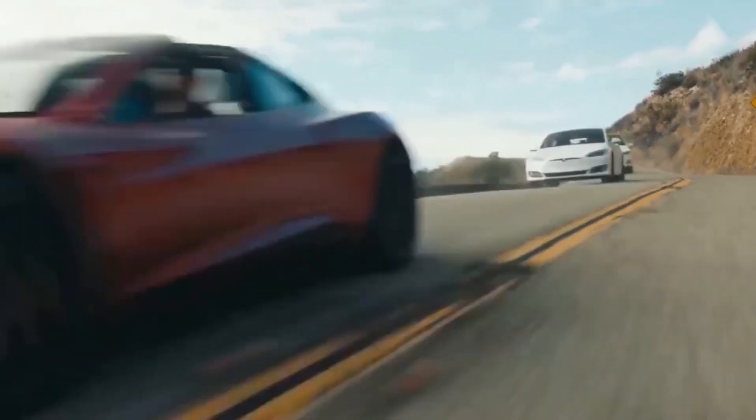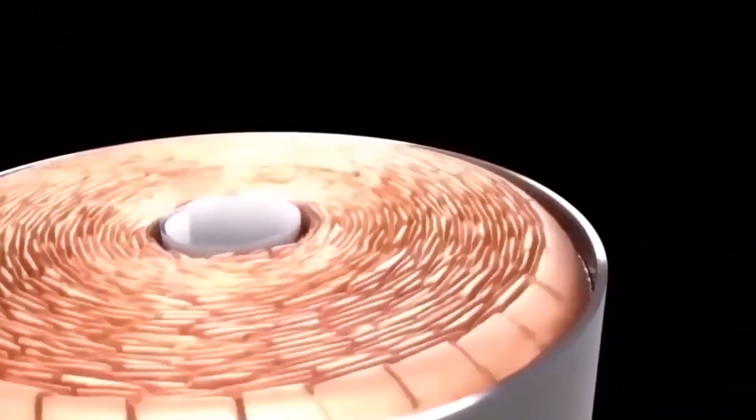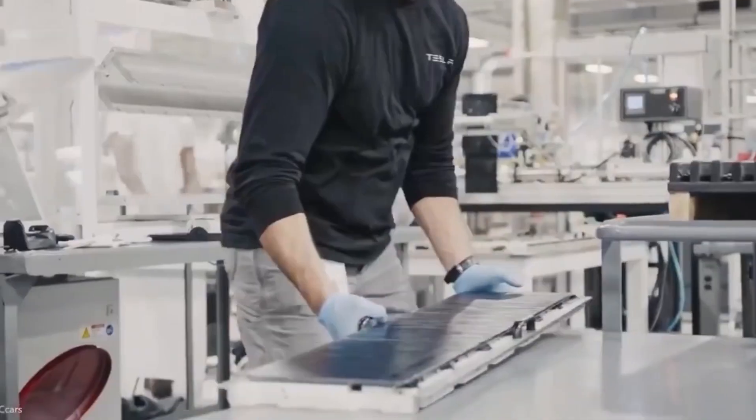Musk says that the making of batteries at scale will be very difficult, but it's critical to his goal of building less expensive, longer-range electric cars that will keep Tesla ahead of a growing pack of competitors.